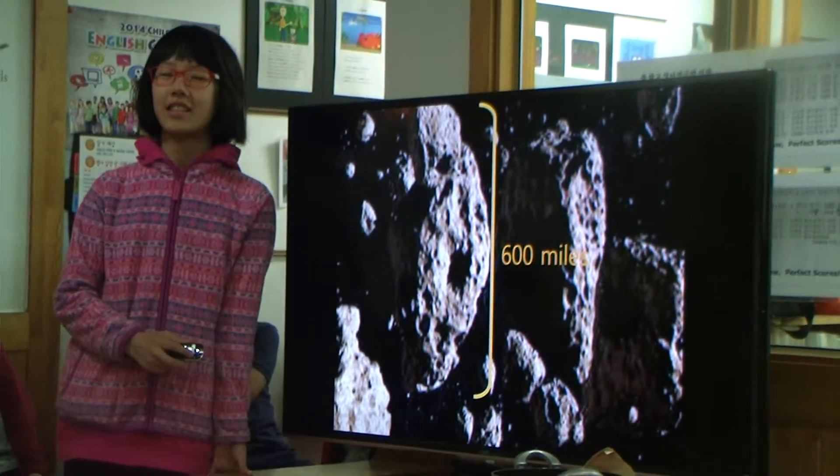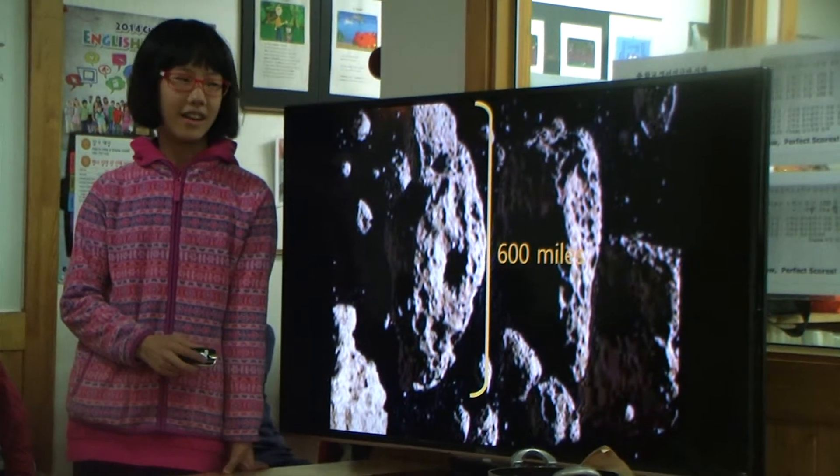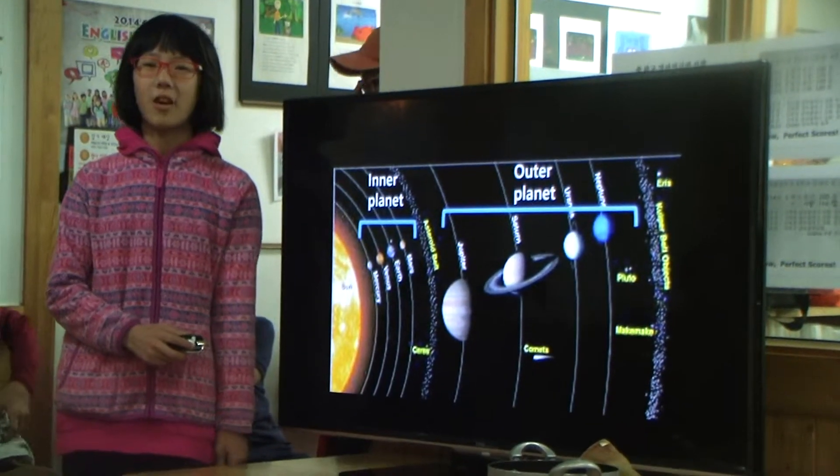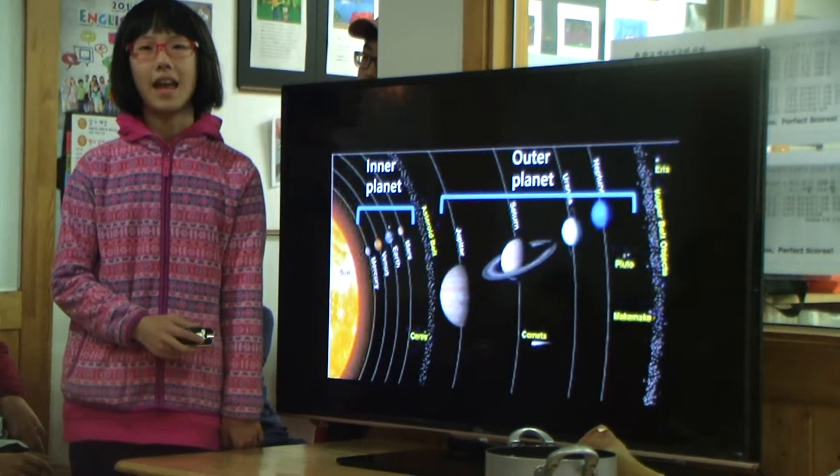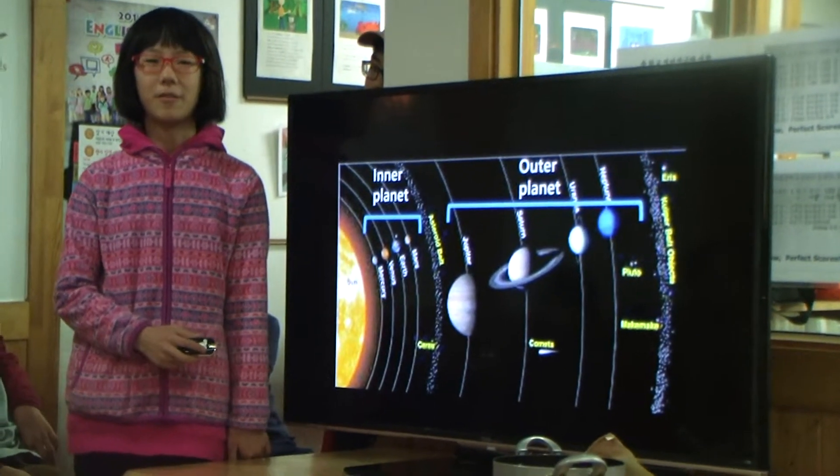The largest asteroid is 600 miles alone. The asteroid belt separates the inner planets from the sun from the outer planets.